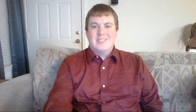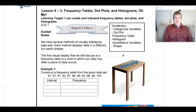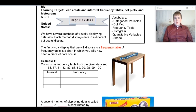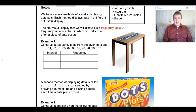Let's get started. The first visual representation we're going to look at is a frequency table. A frequency table is a chart where we tally how often a piece of data occurs — we count up how many times something happens within a certain range.